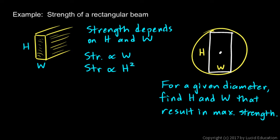The stronger beam will be worth more, and if you're cutting beams from logs and selling them you want to get the best beams you can. Many maximum and minimum problems can be solved with ordinary algebra and trigonometry, but many require calculus. Before calculus, people were able to get approximations to problems like this, but after the development of calculus they were able to confidently come up with exact answers.